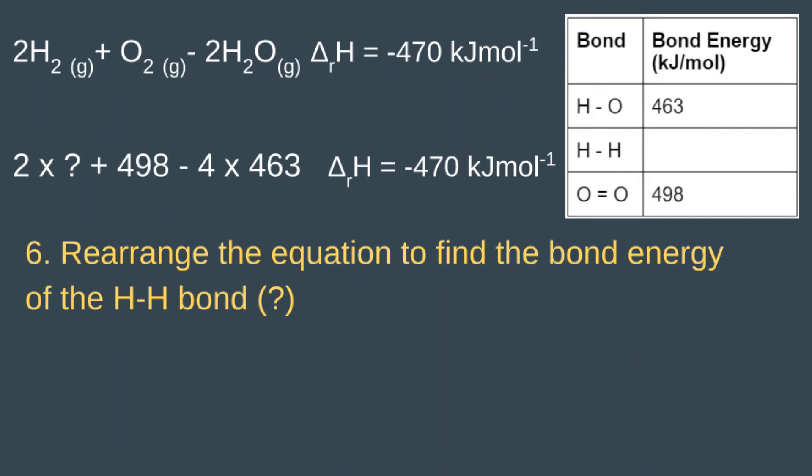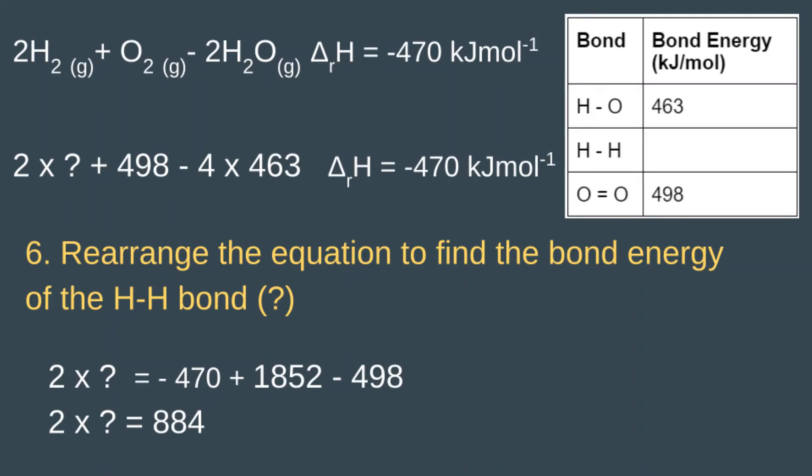In this step we need to rearrange the equation to find the bond energy of the H-H bond. We currently have two times question mark plus 498 minus 1852. The first thing we want to do is get rid of the minus 1852 from the left-hand side. Whatever we do to the left-hand side, we also have to do to the right-hand side.